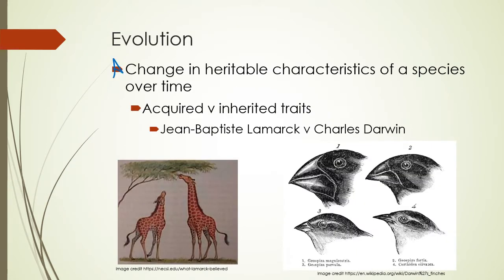Evolution is defined as change in heritable characteristics of a species over time. One early theory was Lamarck's theory of acquired traits — his thought was that some giraffes stretched their necks, making them longer, and when they had babies those babies had longer necks that stretched further, giving even longer necks to the next generation. That's not the best thinking. Charles Darwin is the basis of our understanding of evolution today, and it's more about inherited traits. Organisms that have traits allowing them to survive and have offspring pass those traits on — this is natural selection, survival of the fittest.